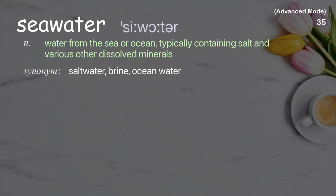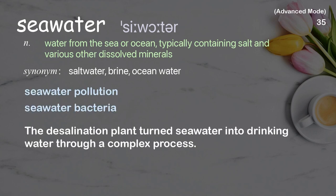Seawater: Water from the sea or ocean, typically containing salt and various other dissolved minerals. Examples: Seawater pollution. Seawater bacteria. The desalination plant turns seawater into drinking water through a complex process.